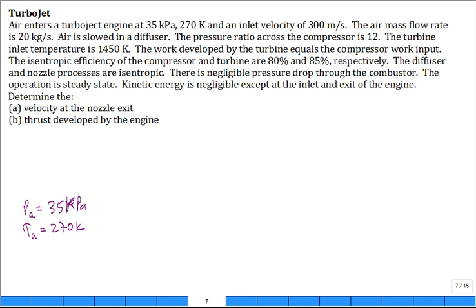And the inlet velocity is 300 meters per second. Then you go through the diffuser to get to state 1. Then you go through the compressor and the air is slowed in the diffuser.